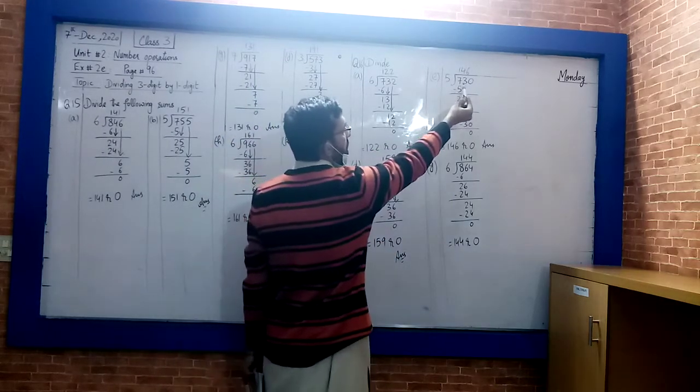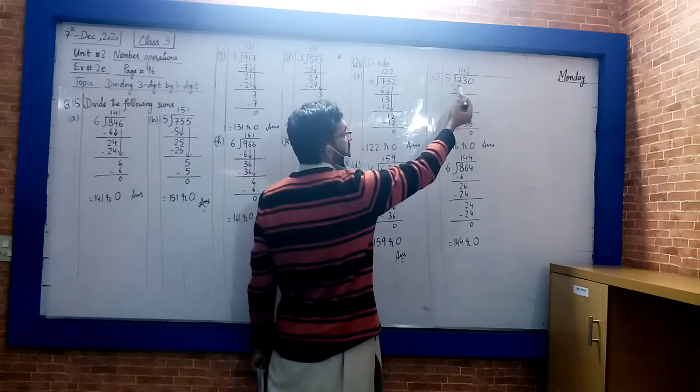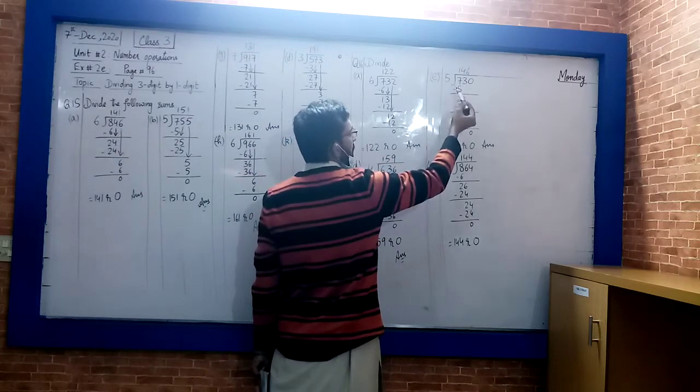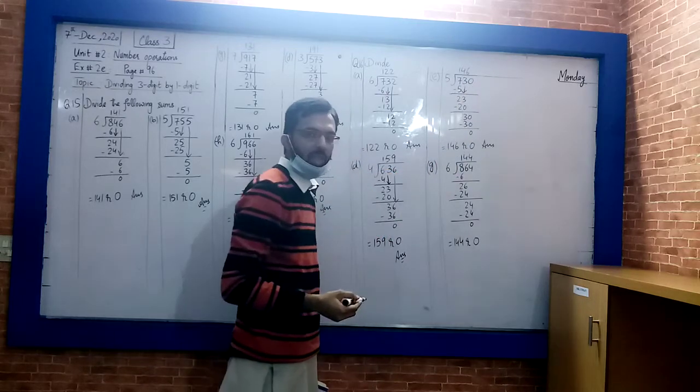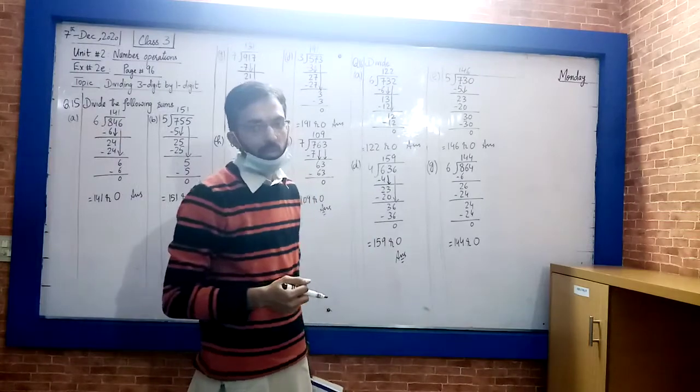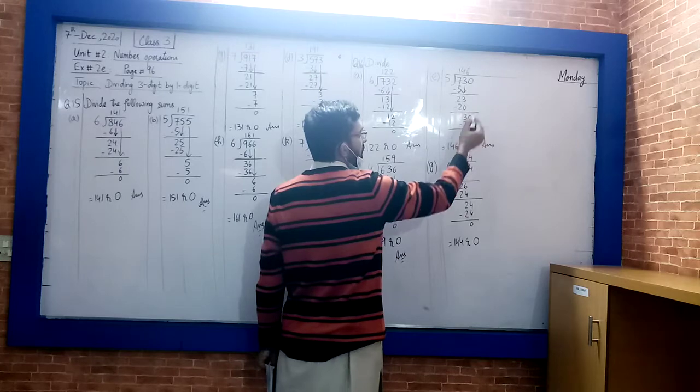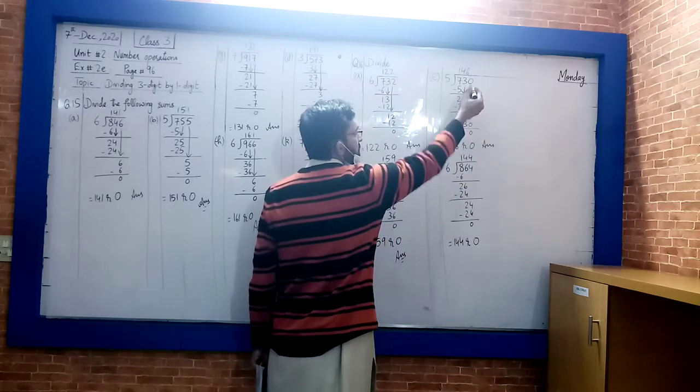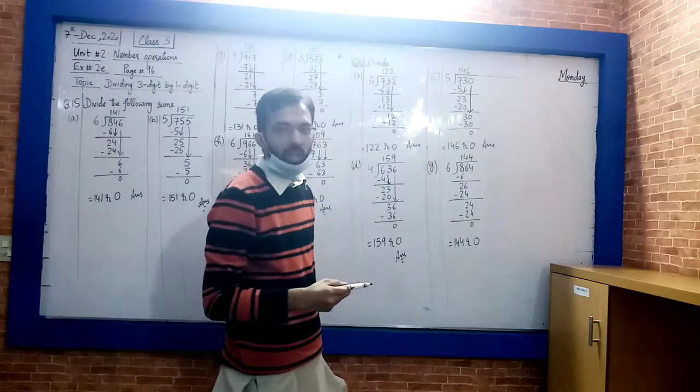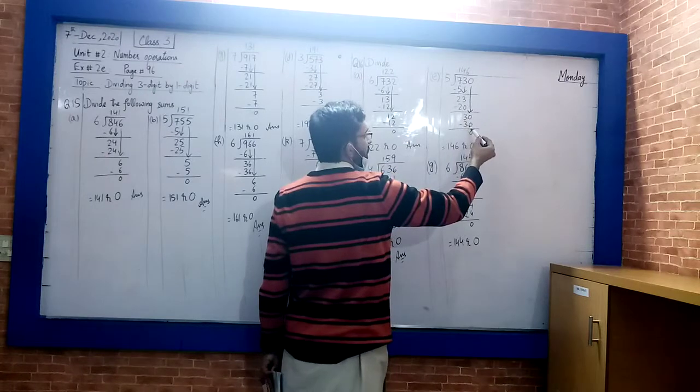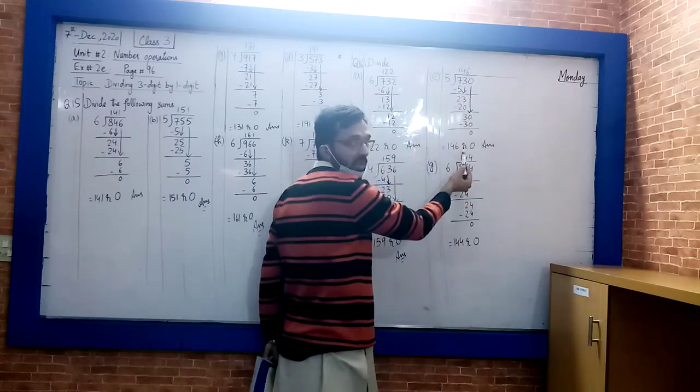Next is 730 divided by 5. First, 5 into 7 goes 1. 7 minus 5 is 2. 3 comes down making 23. 5 into 23 goes 4. 5 times 4 is 20, minus gives 3. 0 comes down making 30. 5 into 30 goes 6. 5 times 6 is 30, minus gives 0. Answer is 146, remainder 0.